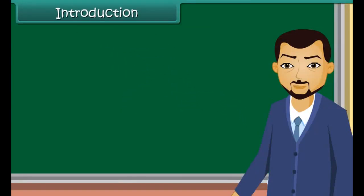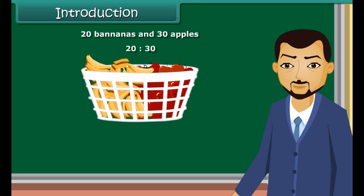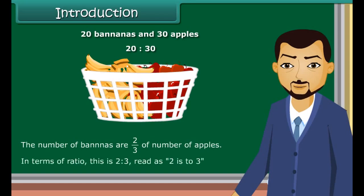Introduction. Ratio means comparing two quantities. A basket has two types of fruits: 20 bananas and 30 apples. The ratio of the number of bananas to the number of apples is equal to 20 is to 30. The number of bananas are 2 upon 3 of the number of apples. In terms of ratio, this is 2 is to 3, read as 2 is to 3.